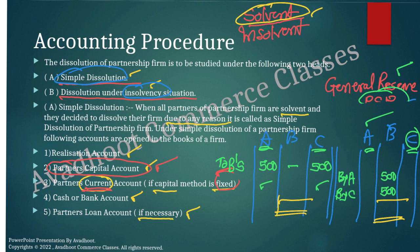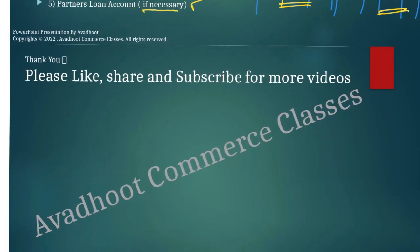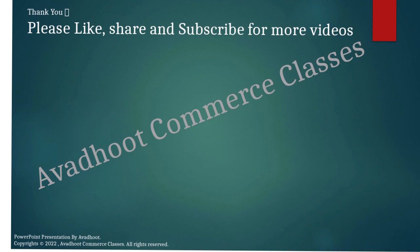By that way, you can ascertain the profit or loss in realization and what balances are to be transferred from the partner's capital account to the cash or bank account. Otherwise it is very difficult to write journal entries. These are the journal entries — solvency problem, insolvency problem, fixed capital method or fluctuating capital method — you have to consider and accordingly open the account. If you want anything more, ask in the comment box or attend the online lectures. If you like my video, please like, share, and subscribe for more videos. Thank you.